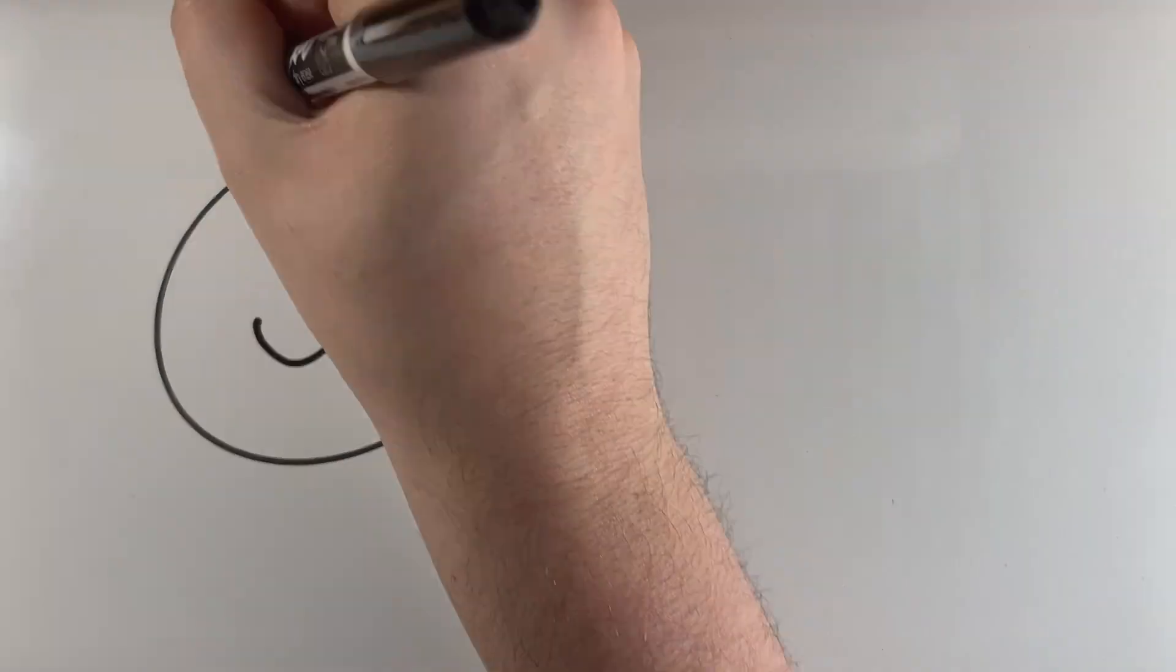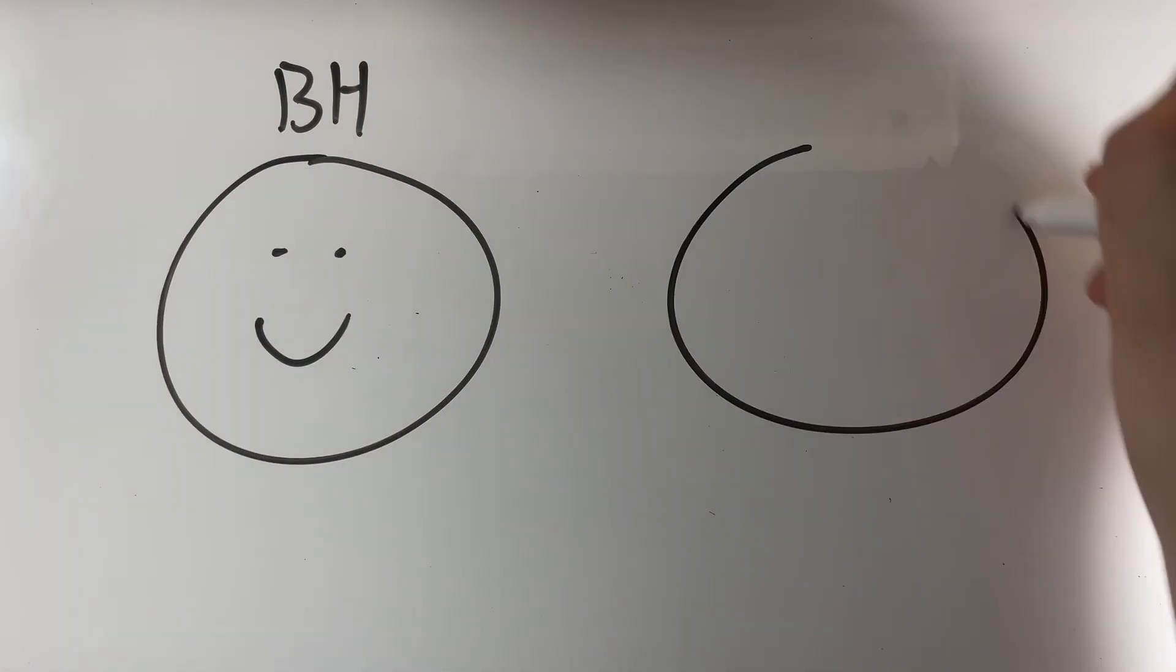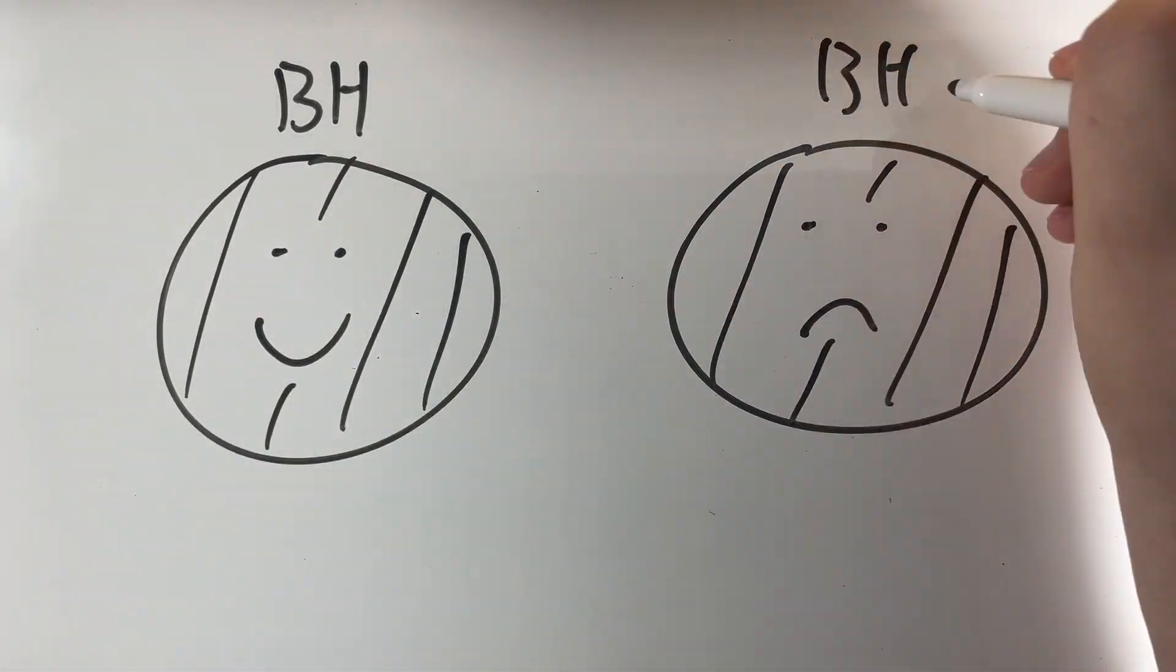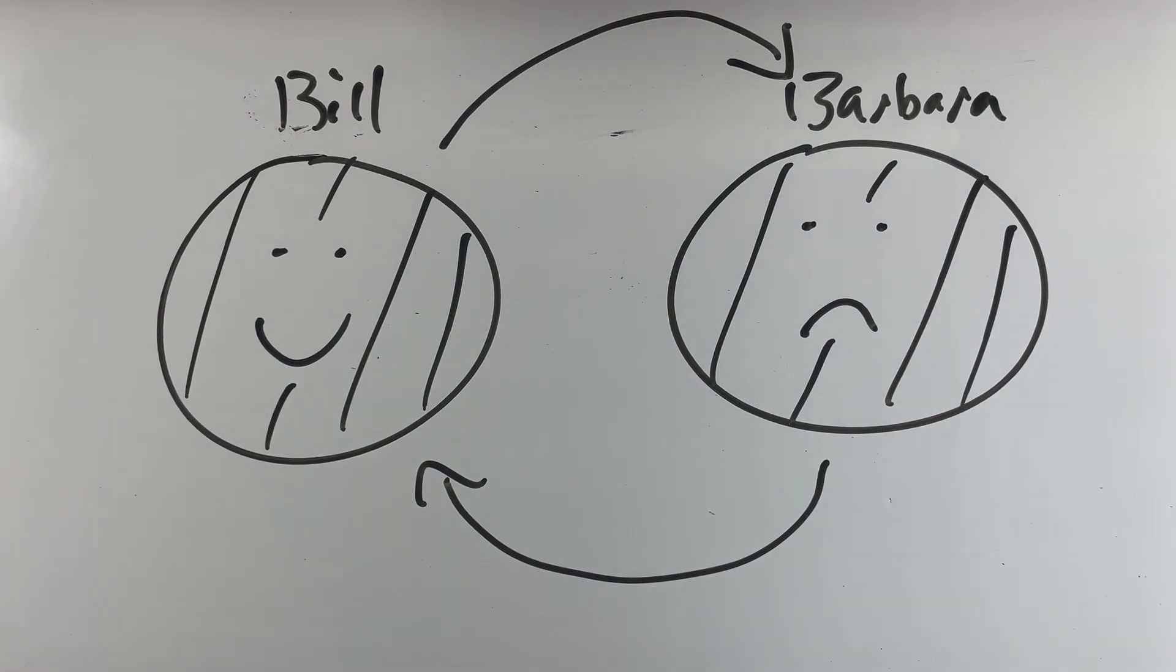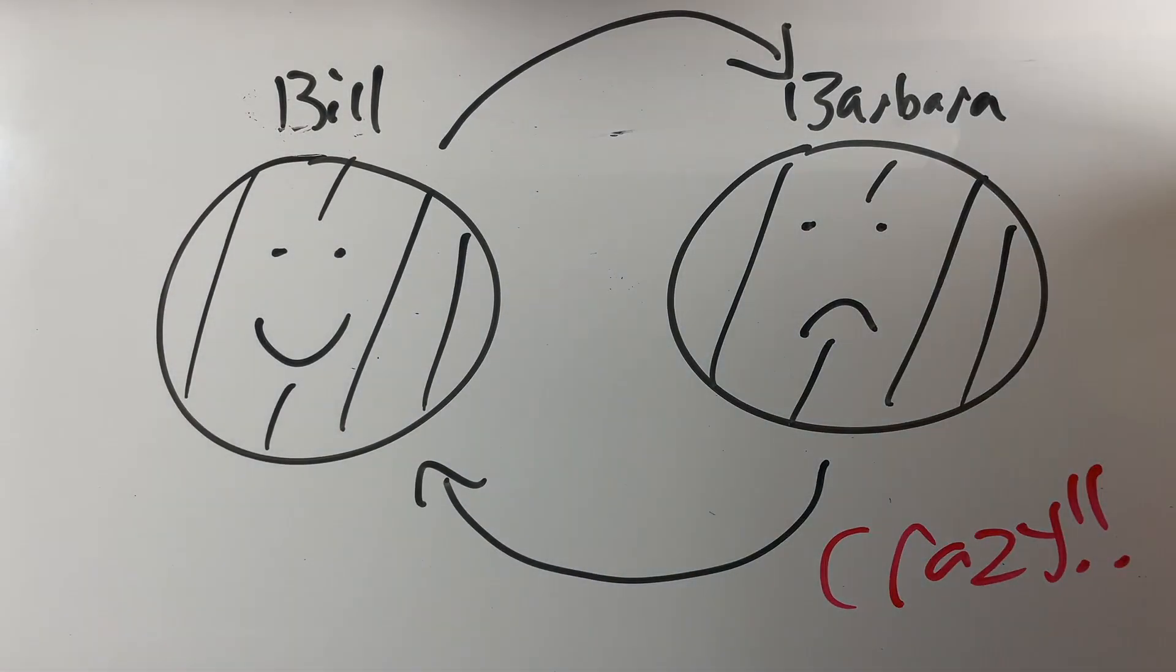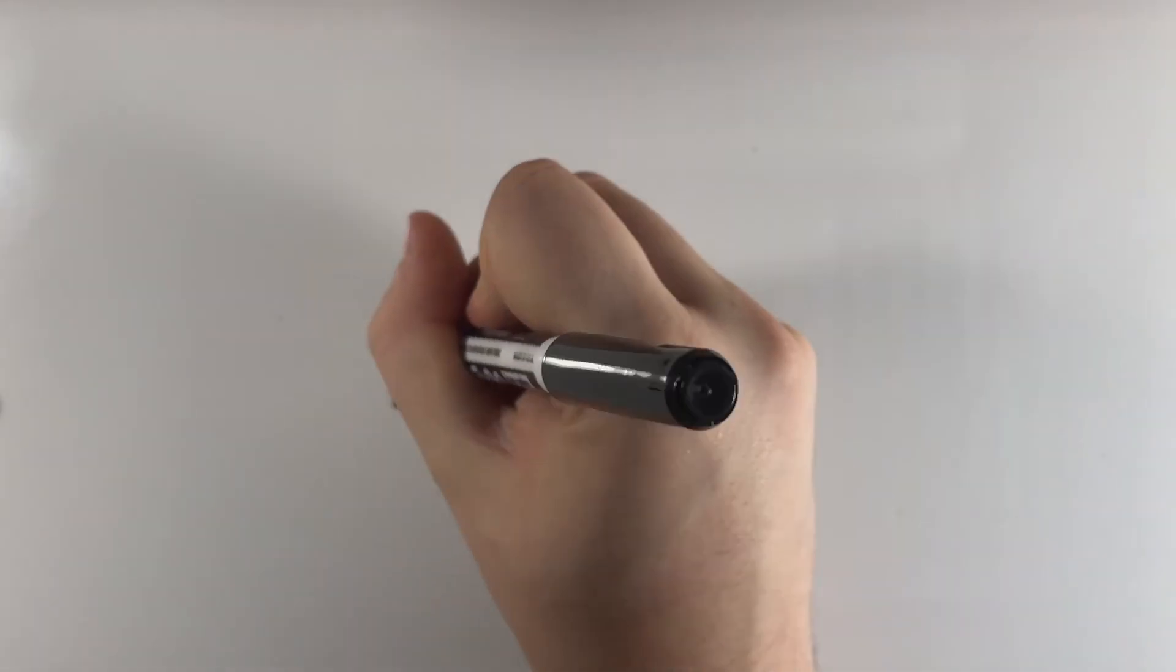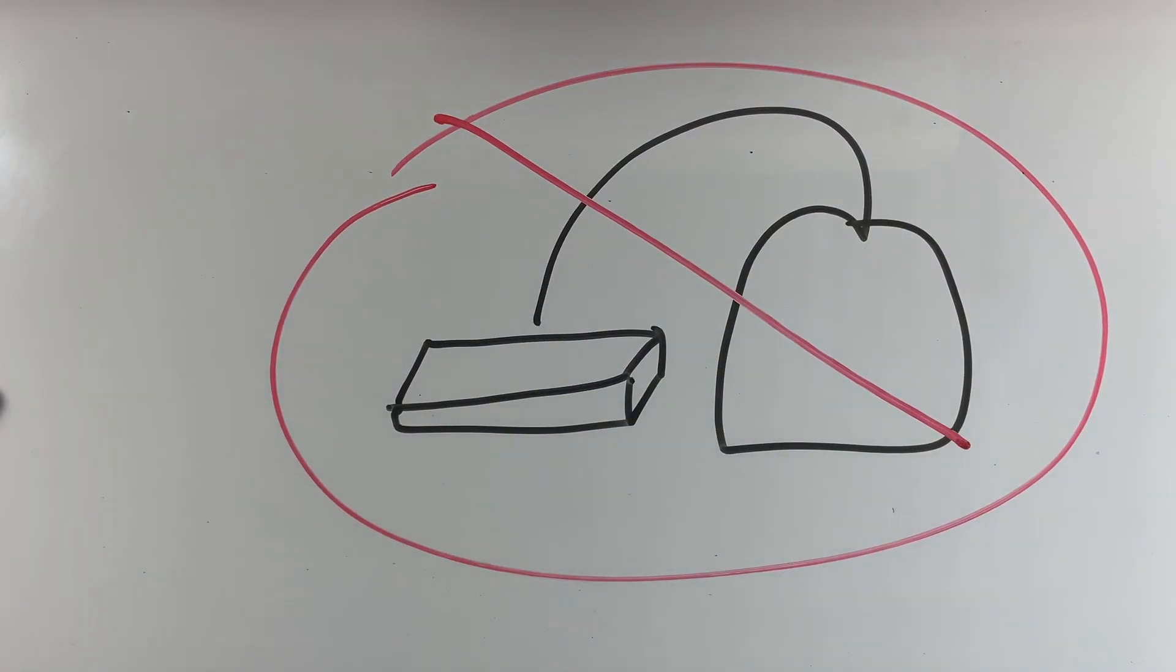This here black hole, let's call him Bill Hader. And this one here, let's call her Barbara Hale. Now, Barbara and Bill are just two black holes orbiting each other. I know, it's crazy, right? Well, contrary to rumor, black holes don't just suck up everything nearby.